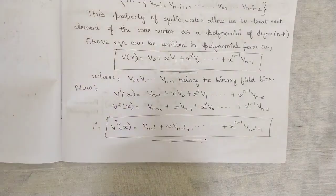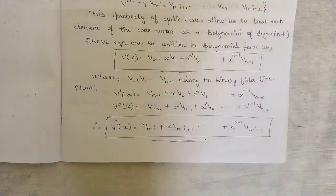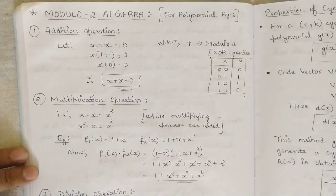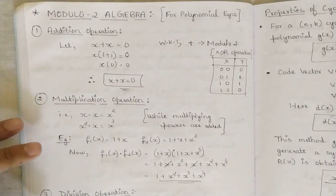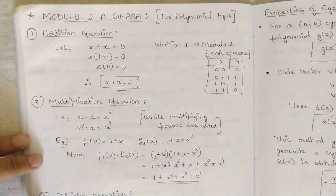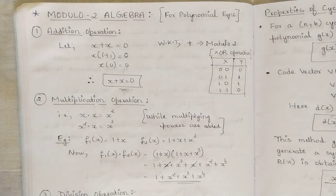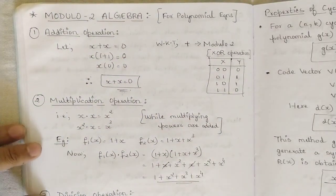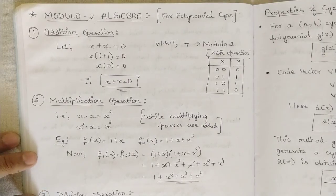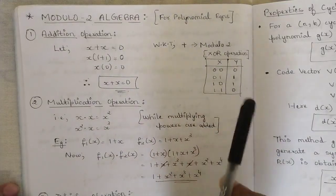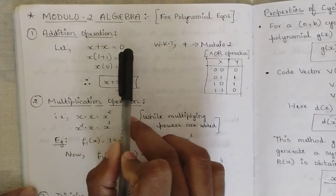Now let us see the operations you need to know in order to solve problems related to cyclic codes using modulo-2 algebra for polynomial equations. There are basically three operations: addition, multiplication, and division. The division operation is a bit complicated but manageable once understood. The first operation is addition, which corresponds to the XOR operation — for example, x + x = 0.